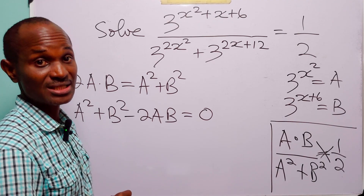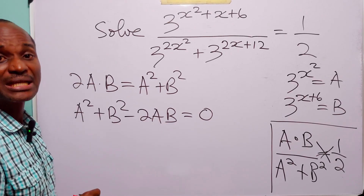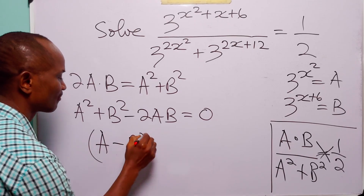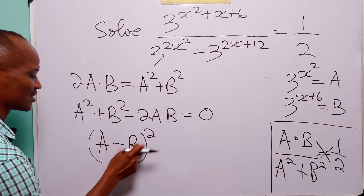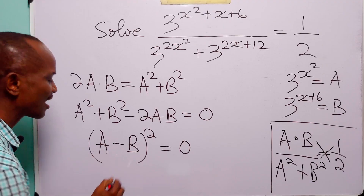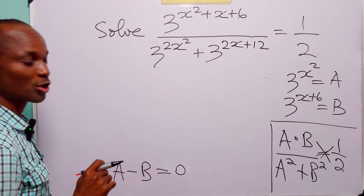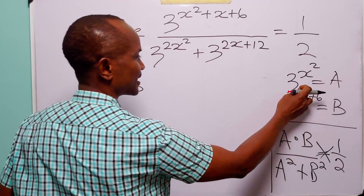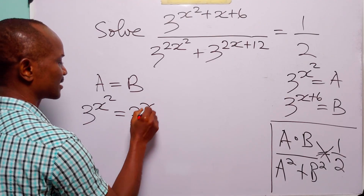Now, the most important thing that the study of mathematics does for us is it trains us to recognize patterns. When you look at this, you will immediately see that this is the expansion for a minus b, squared. Because when you expand this, you get this left-hand side. So now what we have is that a minus b, squared, is equal to 0. Taking the square root of both sides, we have that a minus b is equal to 0, and so a is equal to b. Remember that a is equal to 3 to the power x squared, and b is equal to 3 to the power x plus 6.